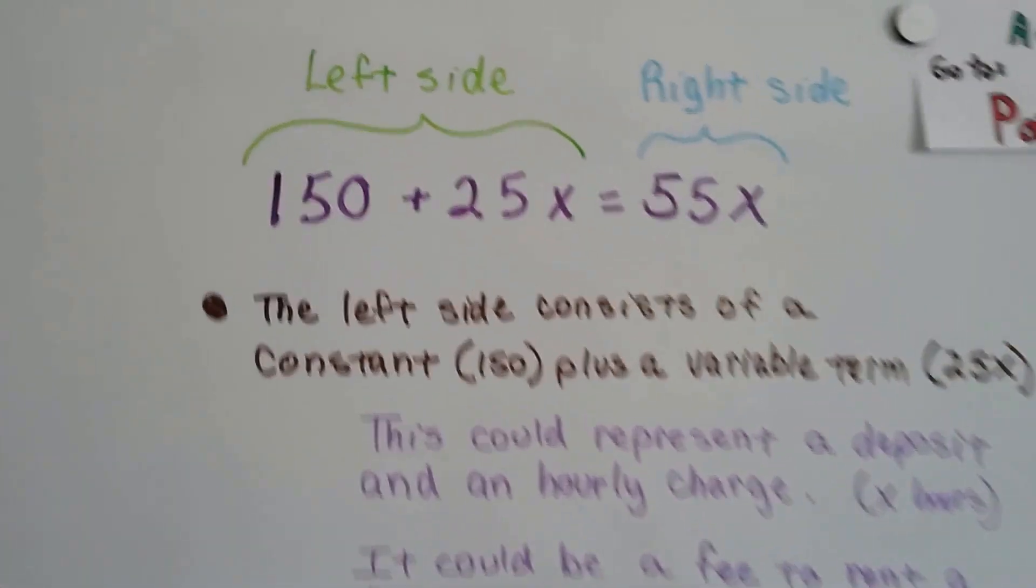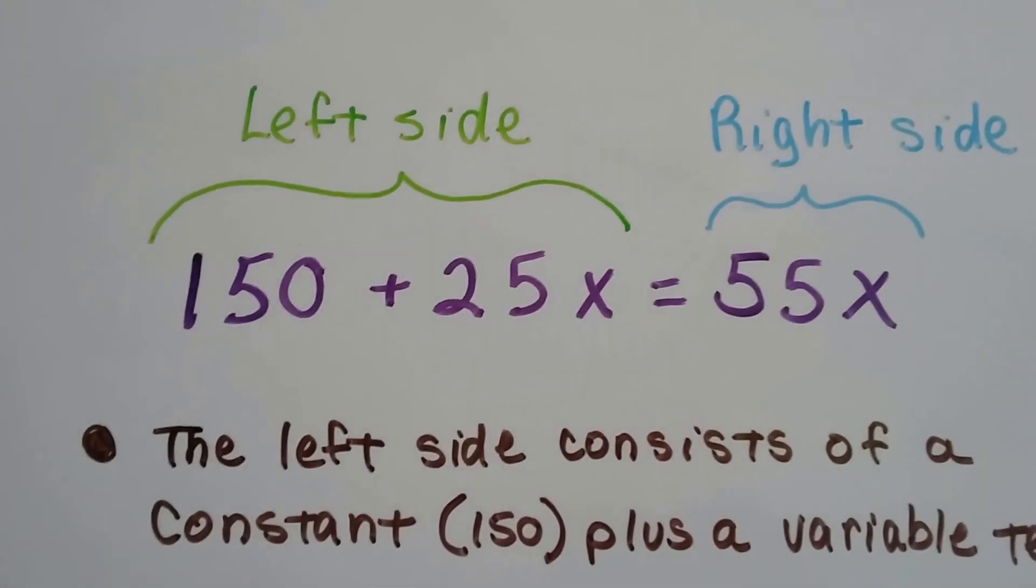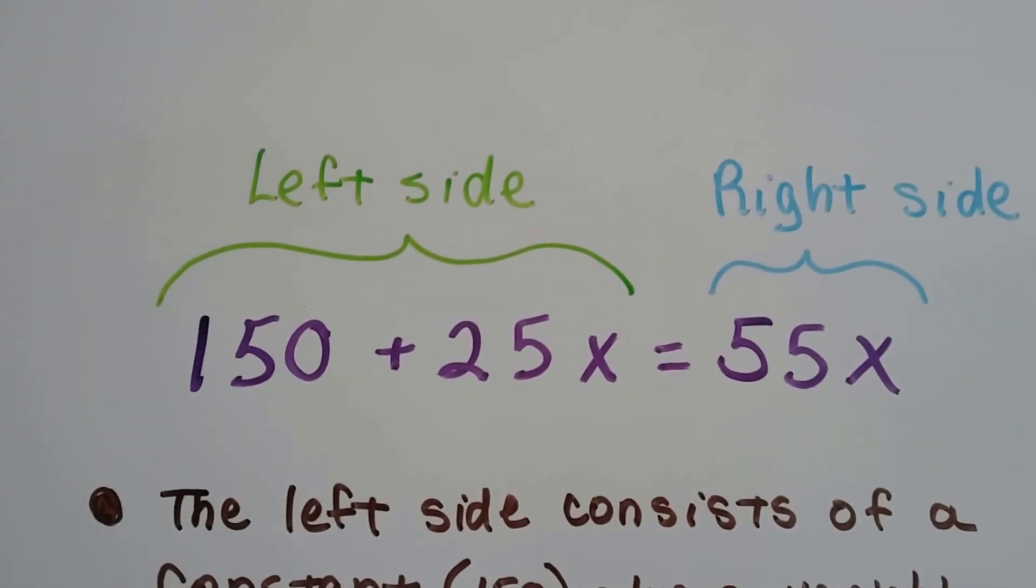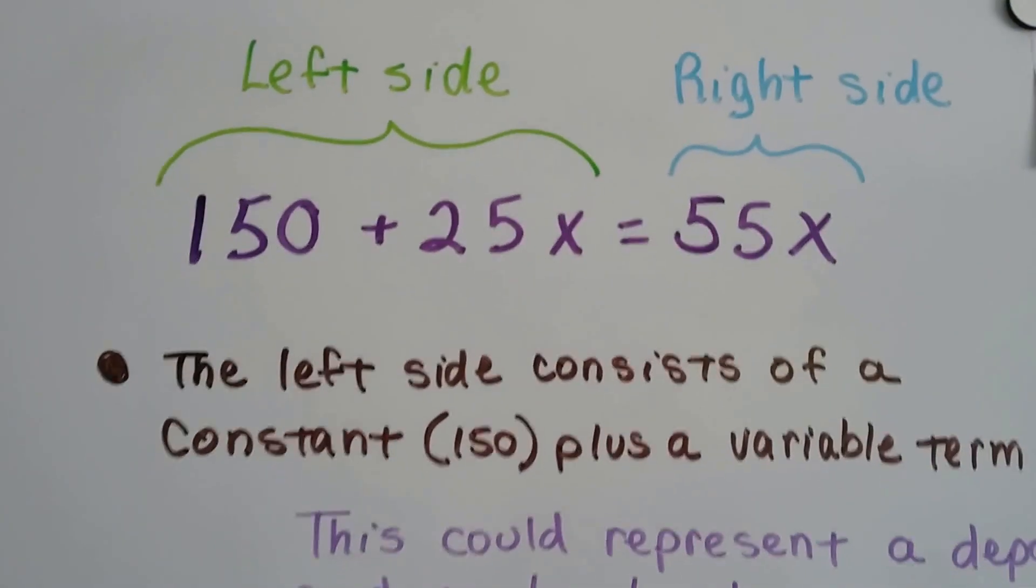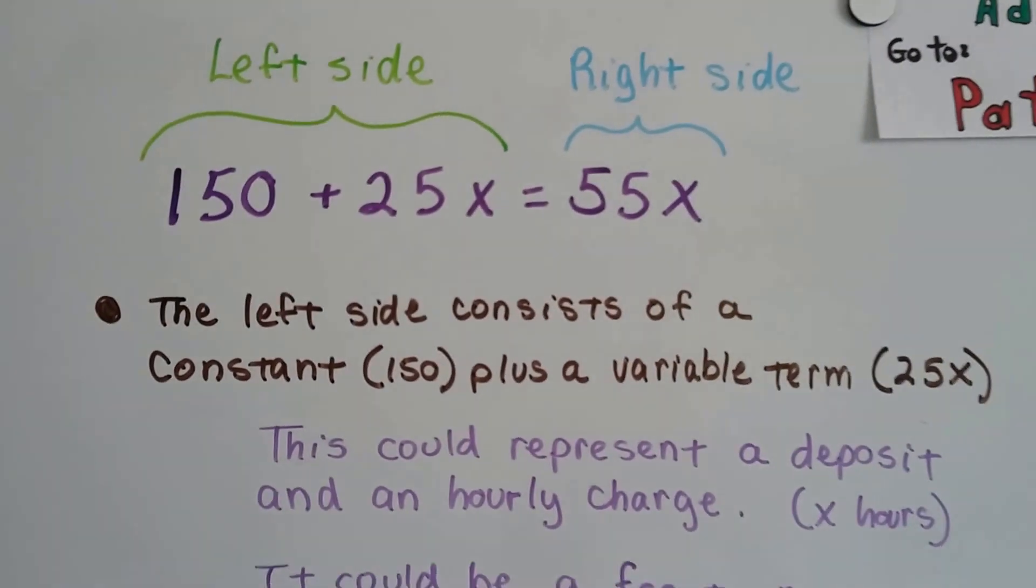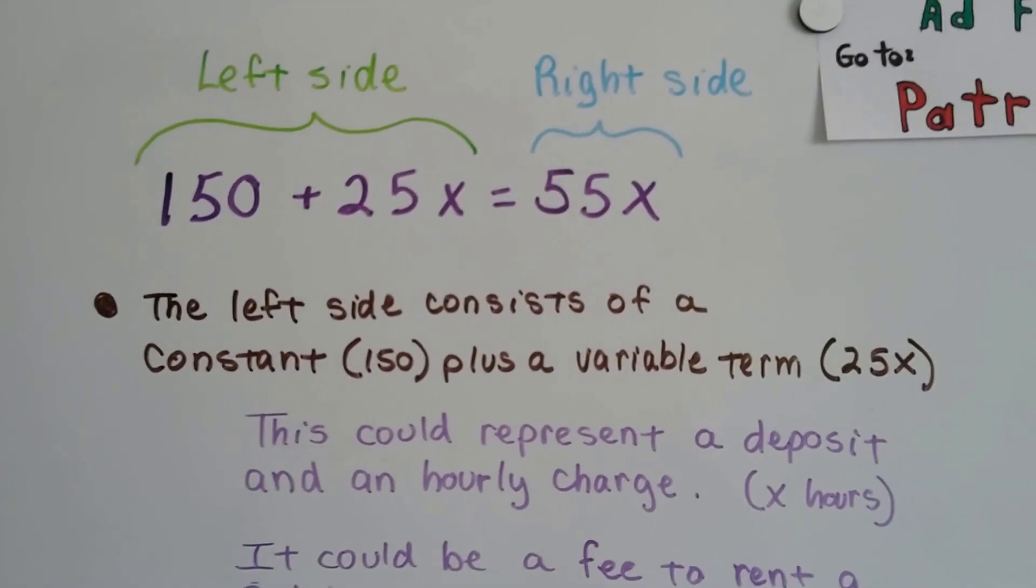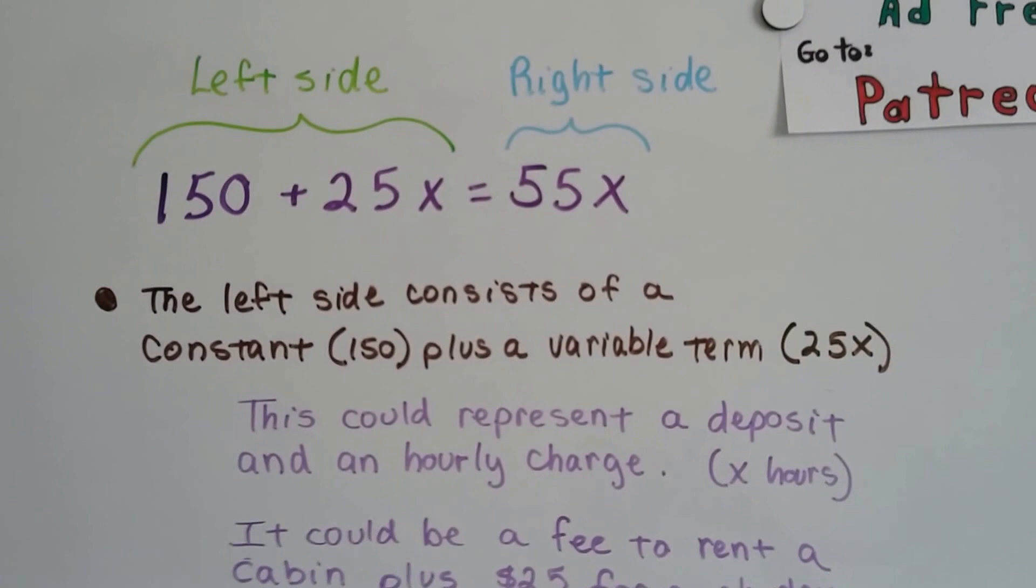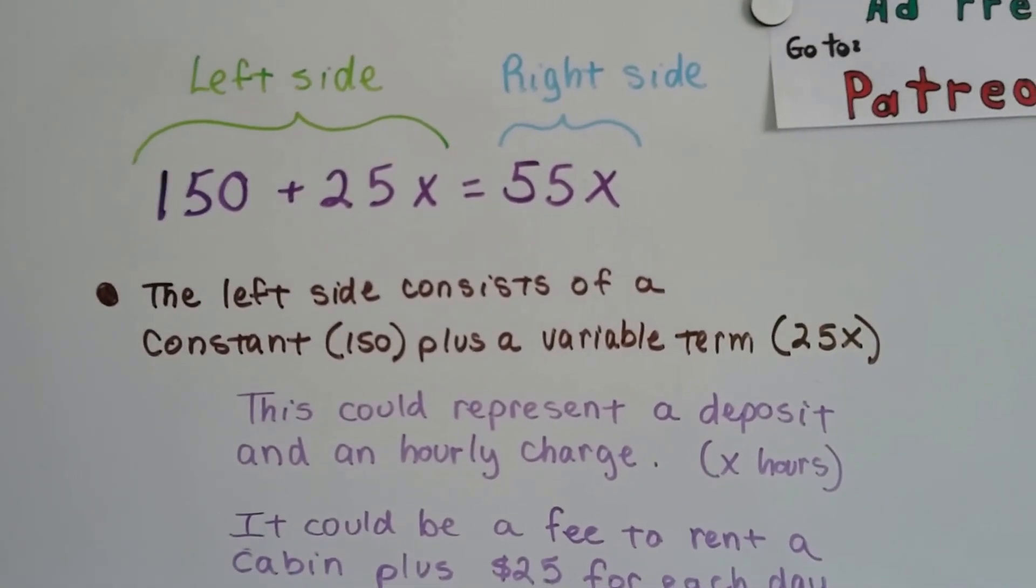So here's our equation. We've got 150 plus 25x equals 55x. You can see on the left side consists of a constant, that's the 150, plus a variable term, that's the 25x. It could represent a deposit and an hourly charge, for x hours.